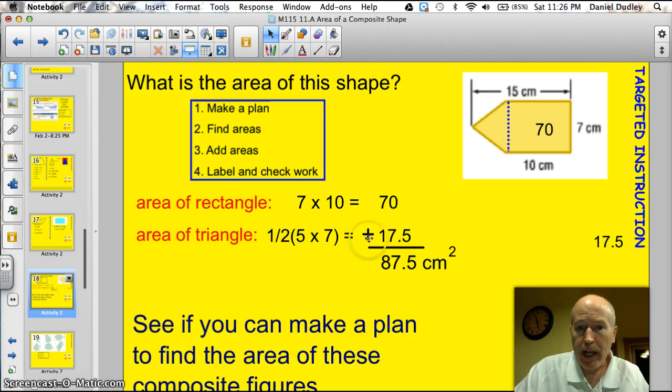Then I find the area of the triangle. That's going to be 1 half the base times the height. Well, if this entire thing here is 15, and this is 10, the height has to be 5. And the base is 7. So I put 5 times 7 in there. And, of course, that's 35. And 1 half of 35 is 17 and a half. That's how I got 17 and a half. You can do that in a calculator. This is certainly a calculator target. Add those two together, and we have 87.5 centimeters squared. All right. I made a plan. I added my areas together, and I checked my work. Looks good.